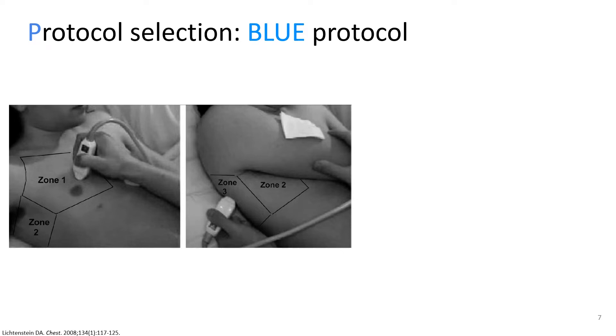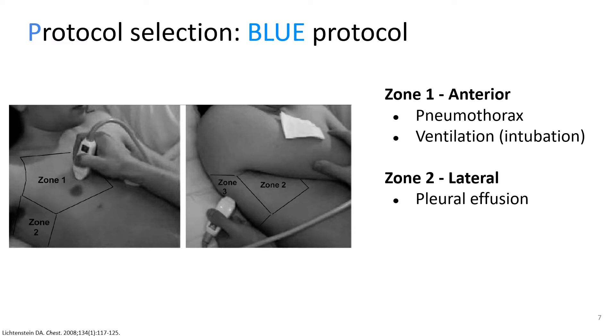Zone one refers to the anterior chest over the second to fourth intercostal spaces between the midclavicular line and the anterior axillary line. Zone two is located over the lateral chest at the level of the diaphragm from the seventh to the ninth intercostal space between the mid and posterior axillary lines. And zone three is located posterior to the posterior axillary line and above the level of the diaphragm. Zone one is ideal for evaluation of pneumothorax and ventilation in the setting of endotracheal intubation. Zone two is ideal for assessment of pleural effusion. And all zones including zone three should be scanned when evaluated for consolidations and pulmonary edema.